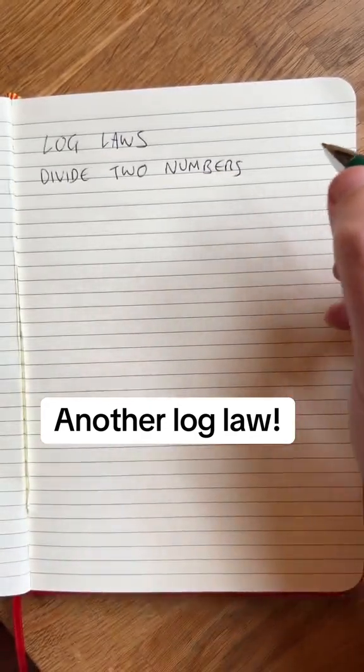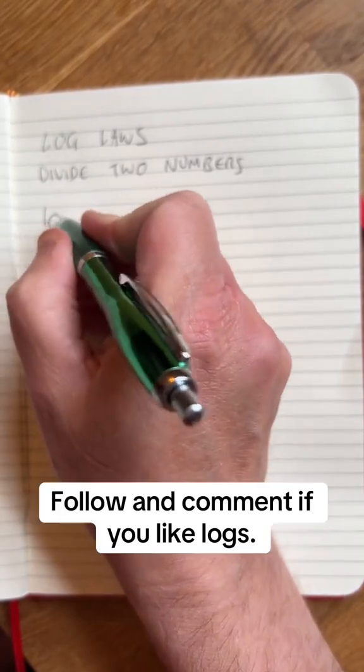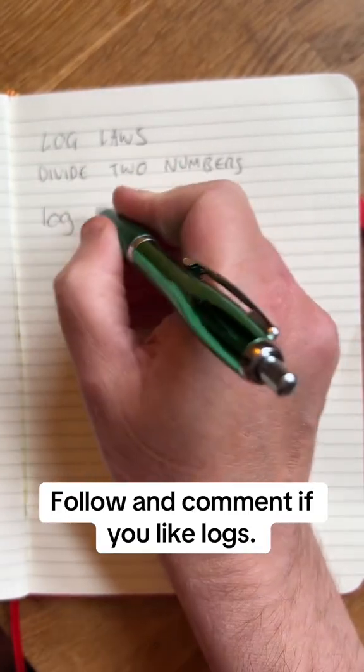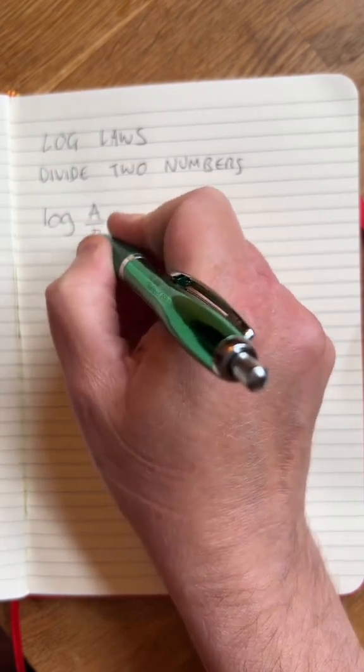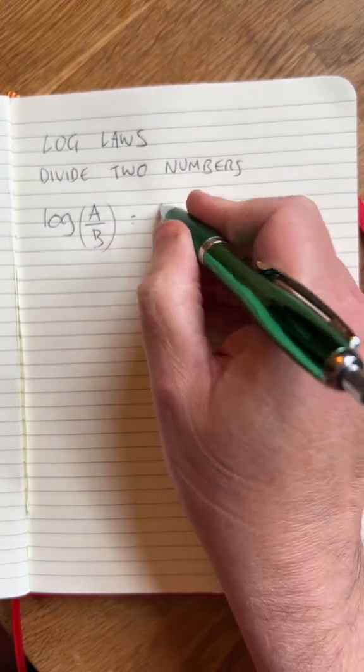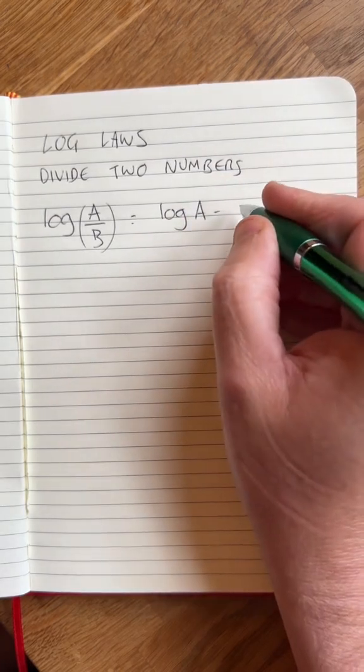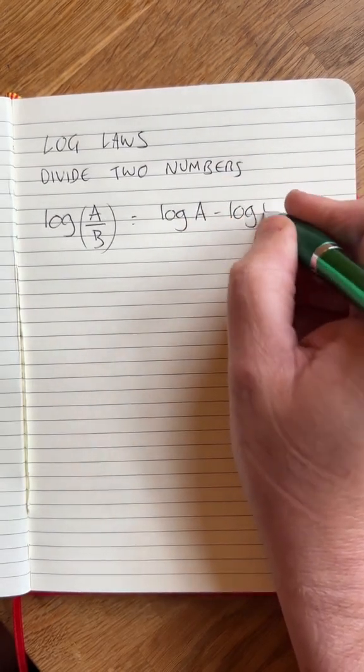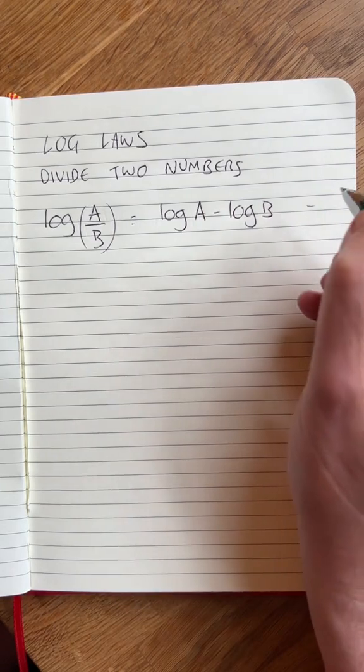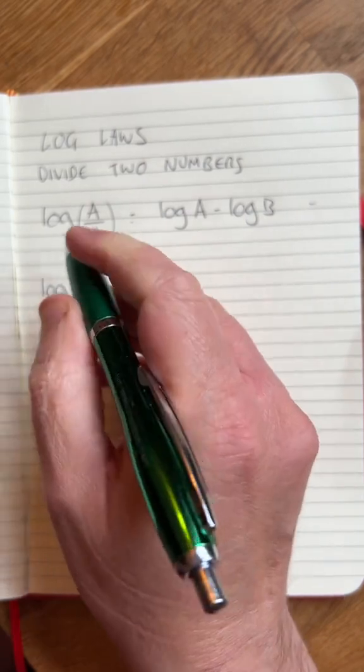Log law is dividing two numbers. Log base 10 of A divided by B, where A and B are numbers, is the same as log base 10 of A minus log B. That's the rule.